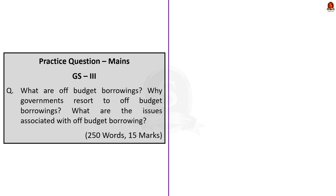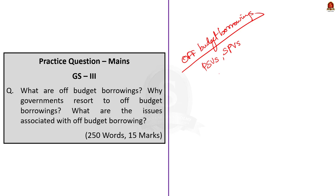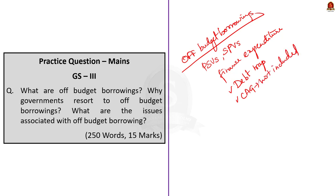To summarize: off-budget borrowings are loans obtained by government entities like PSUs or special purpose vehicles on behalf of the government to finance its expenditure. According to the CAG, these borrowings are not included while computing debt and fiscal deficit. So the government can borrow more without an increase in fiscal deficit, but this will ultimately result in a debt trap of the state government. Let us now move on to the next news article discussion.